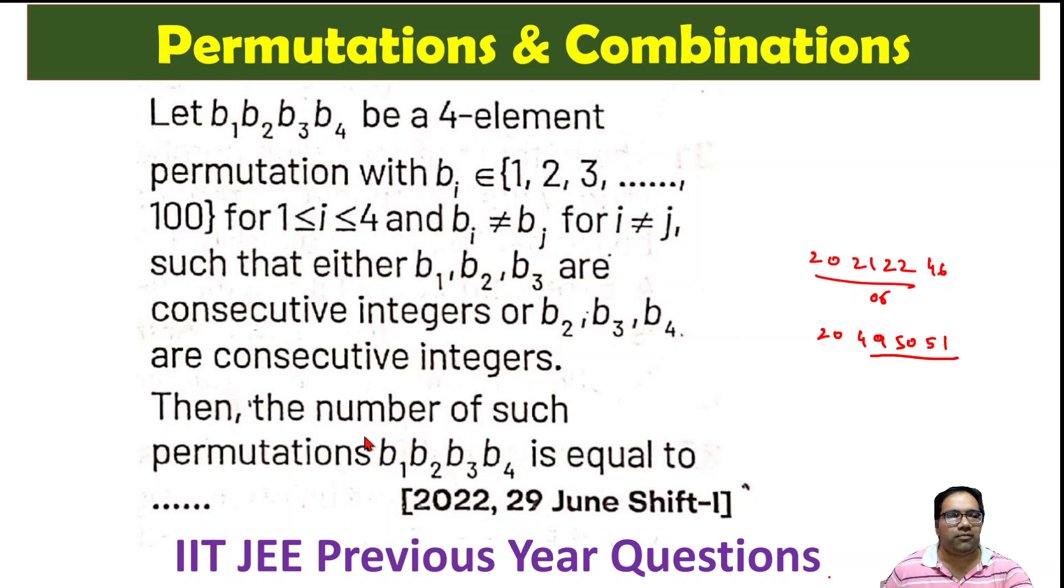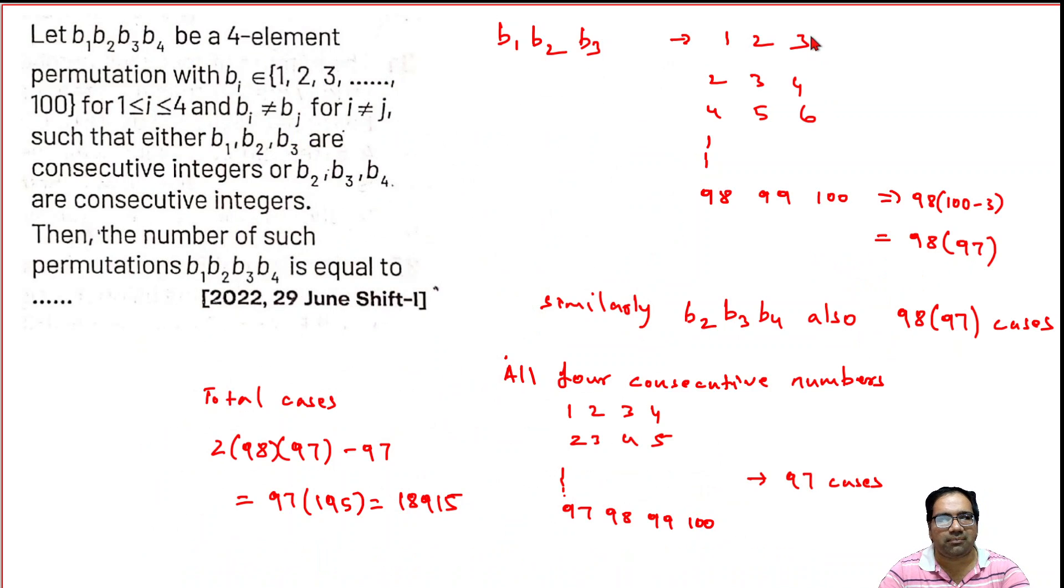So now B1, B2, B3, if these three are continuous, then what kind of numbers are we getting? We will get numbers like 1, 2, 3; 2, 3, 4; 4, 5, 6 up to 98, 99, 100, if first three numbers are consecutive.